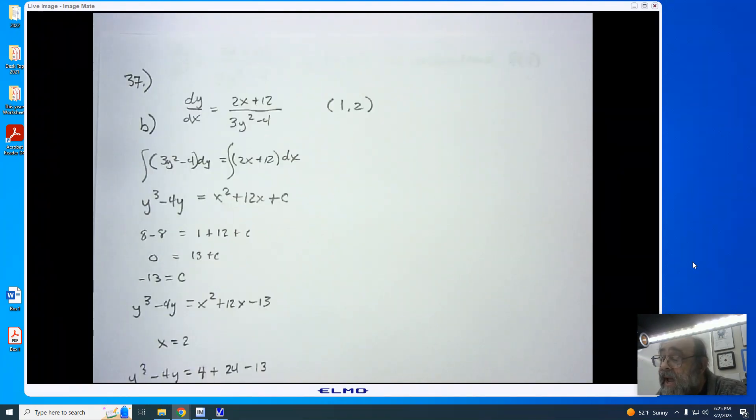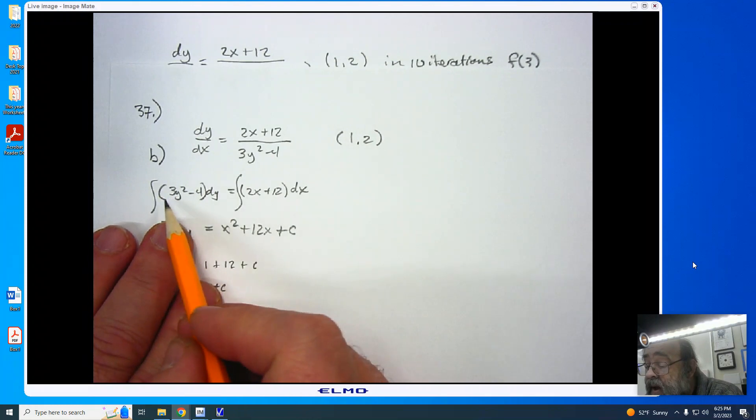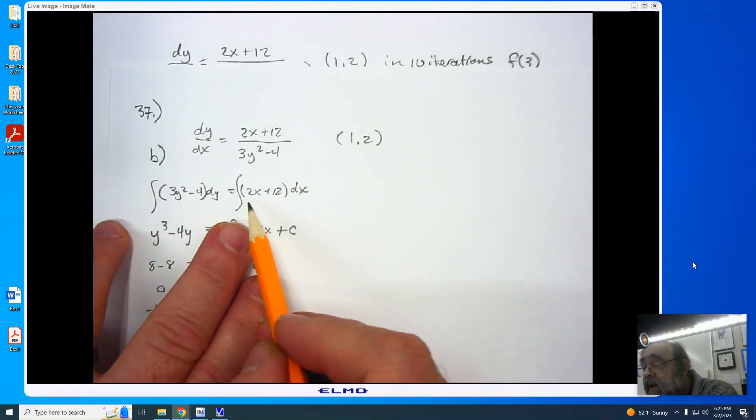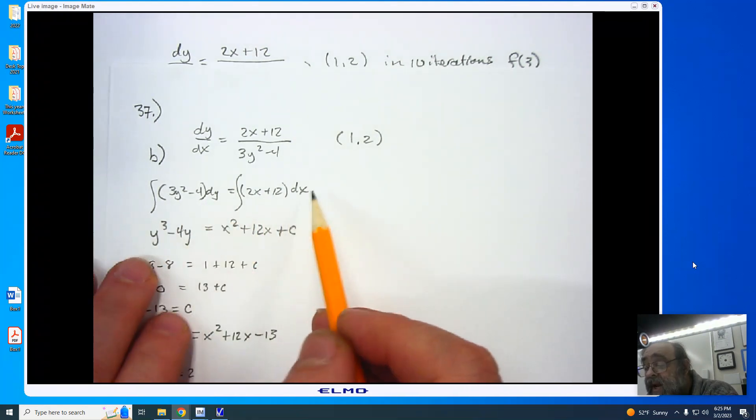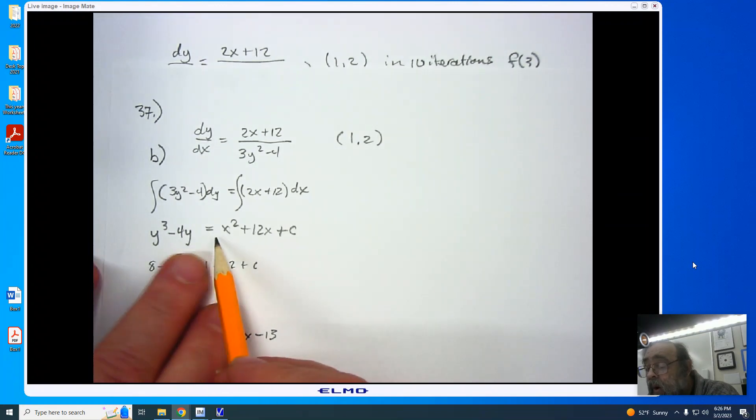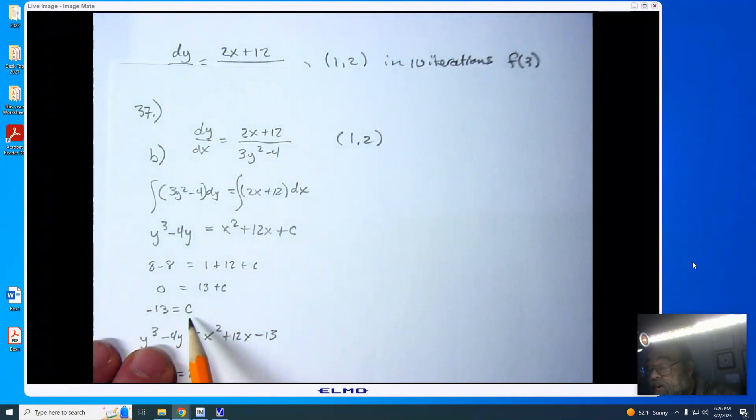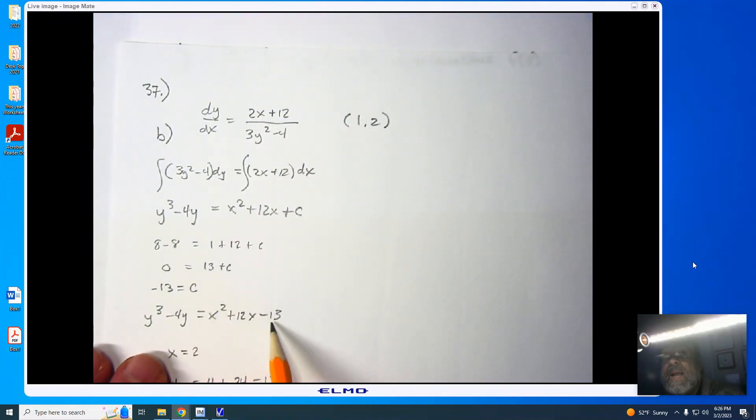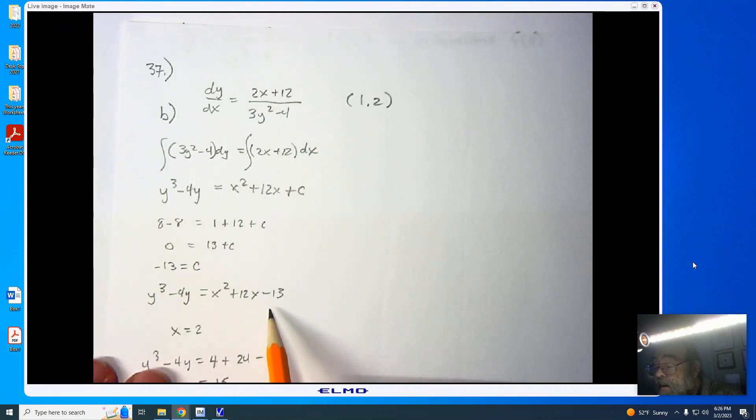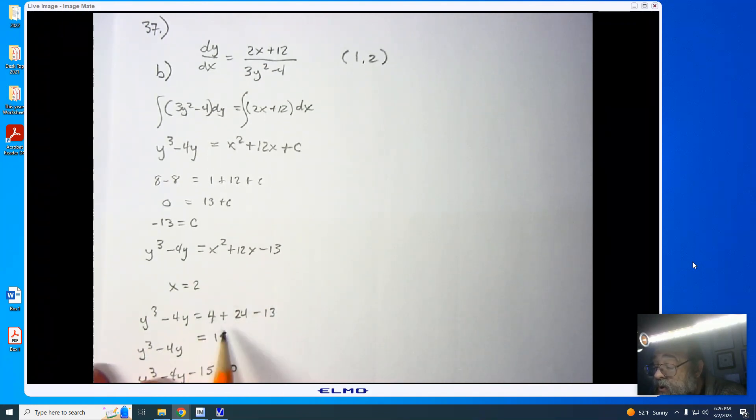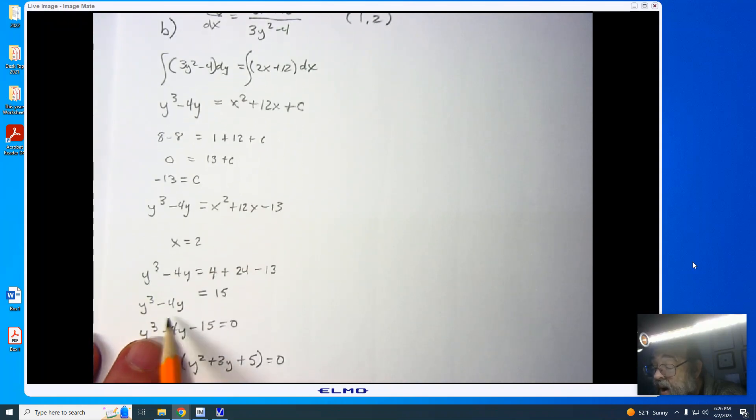So we start off with our dy/dx, and we have to separate our variables. This is going to allow me to have the integration of (3y squared minus 4) dy, equaling the integration of (2x plus 12) dx. When I integrate, I get y cubed minus 4y, equaling x squared plus 12x plus c. I now take my value of (1, 2), and I plug it in. I end up getting 0 equals 13 plus c, and therefore negative 13 is equal to c. I now end up putting the 13 in. You'll notice my lights went out. I'm very sorry about that, but there's not much I can do. I now take x equals 2, and I plug it in for the x value. I'm going to simplify the entire right side, which will leave me with 15.